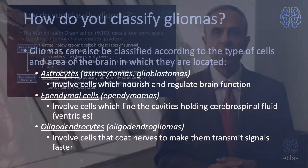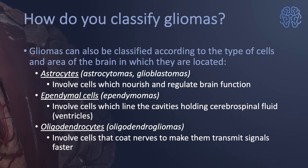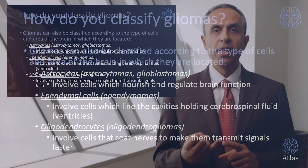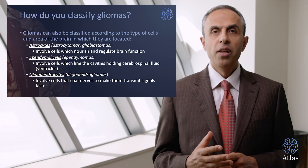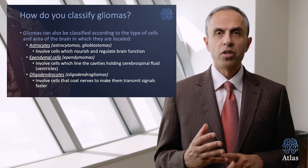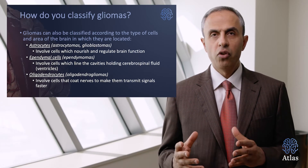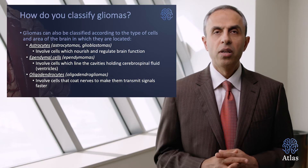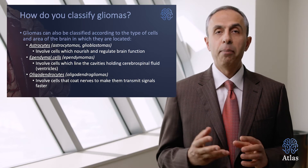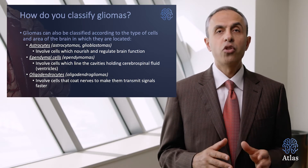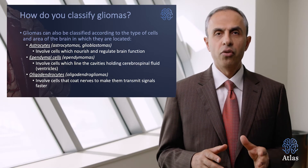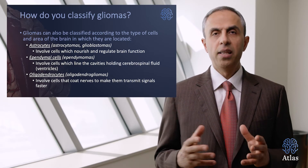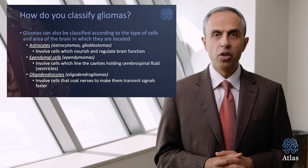Gliomas are also classified based on the origin of the cells that make up the tumor. There are three main types: astrocytes, which lead to astrocytomas or glioblastomas; ependymal cells, which lead to ependymomas; and oligodendrocytes, which lead to oligodendrogliomas.